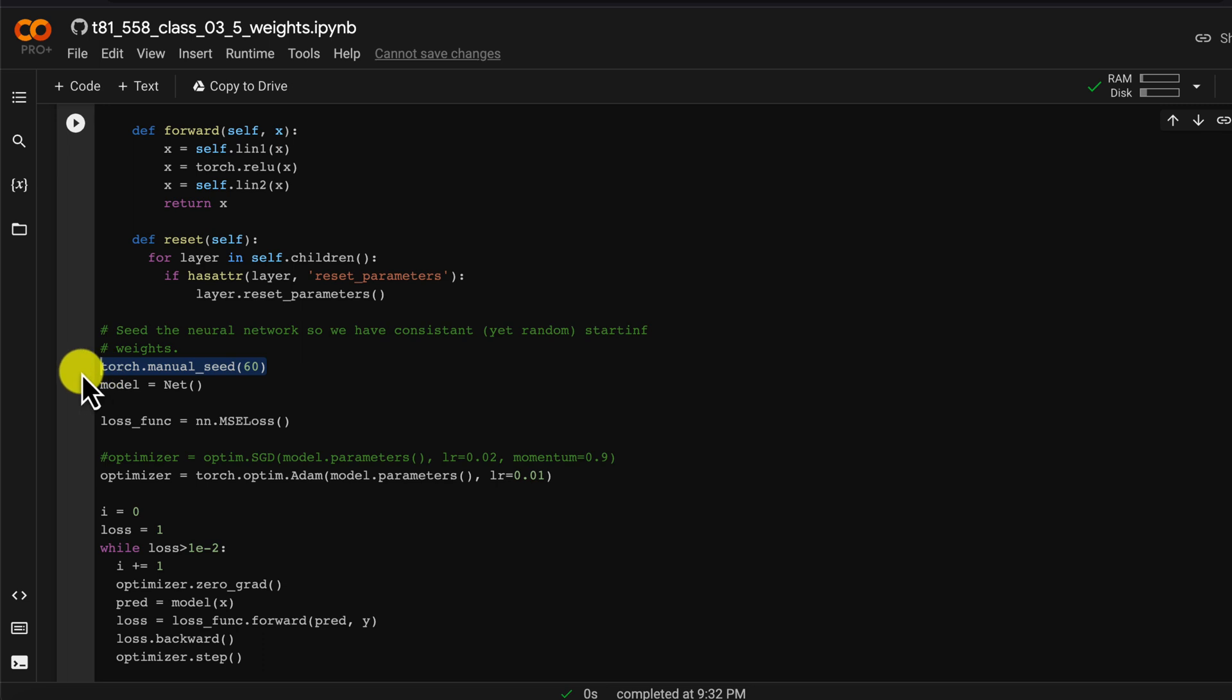I am going to seed the random number generator. What that means is it will produce consistently random numbers. So the numbers that it generates are random but each time that we run this they'll be the same random numbers. That makes it a lot easier for my video to stay lined up with the numbers that you're seeing here because I want them to stay aligned.